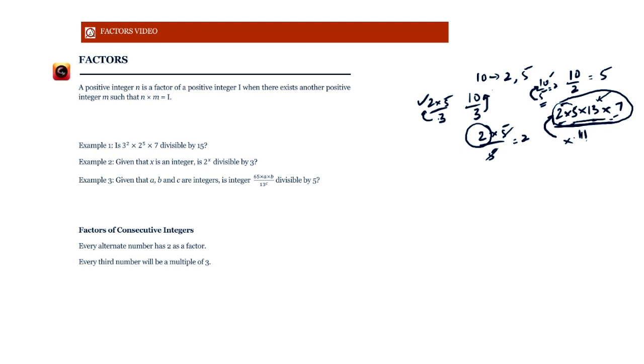Let's look at an example. Is 3 squared into 2 to the power of 5 into 7 divisible by 5? Now, we have quite a few 3s, quite a few 2s, and we have a 7. But we don't have any 5 in the numerator. That is why we cannot cancel off the denominator of the 5 with anything in the numerator. It doesn't matter how many 3s or 2s we have, we can't make a 5 out of it.